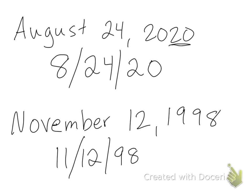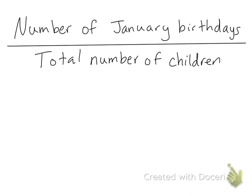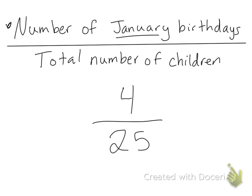We can also write a part of a set as a fraction. Let's say I wanted to make a fraction of how many people had January birthdays over the total number of children. In our class, we have about 25 students. Let's say that only four students have birthdays in January. So I would put four over 25. This fraction tells us that four out of 25 children have January birthdays.